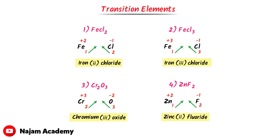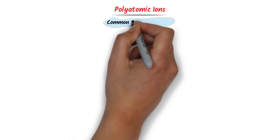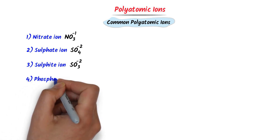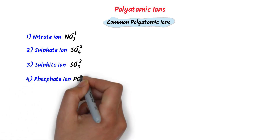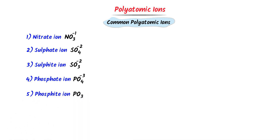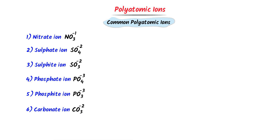Now we will learn naming ionic compounds with polyatomic ions. Some common polyatomic ions include: nitrate (NO₃⁻), which carries −1 charge; sulfate (SO₄²⁻), which carries −2 charge; sulfite (SO₃²⁻), which carries −2 charge; and phosphate (PO₄³⁻), which carries −3 charge.